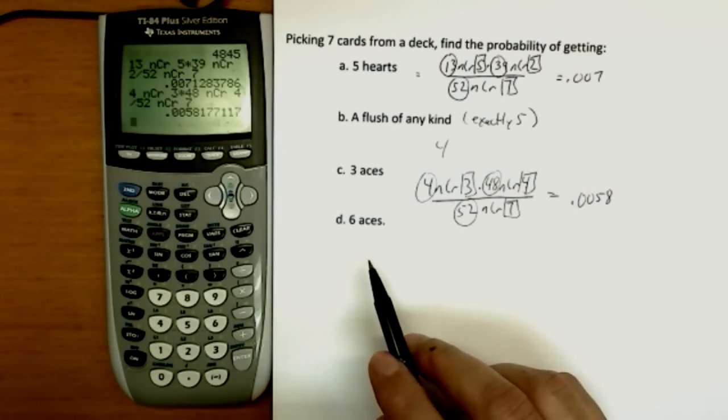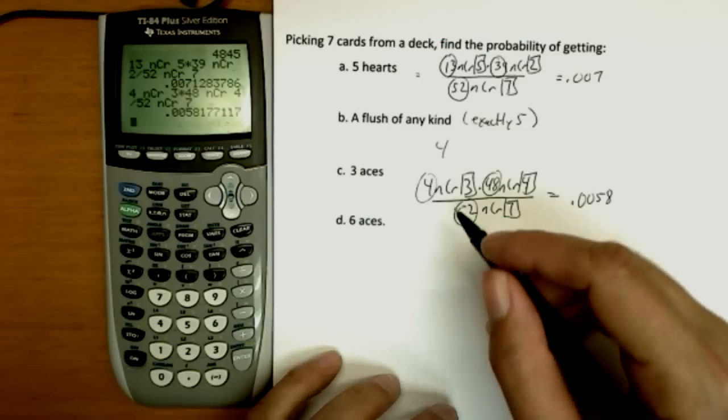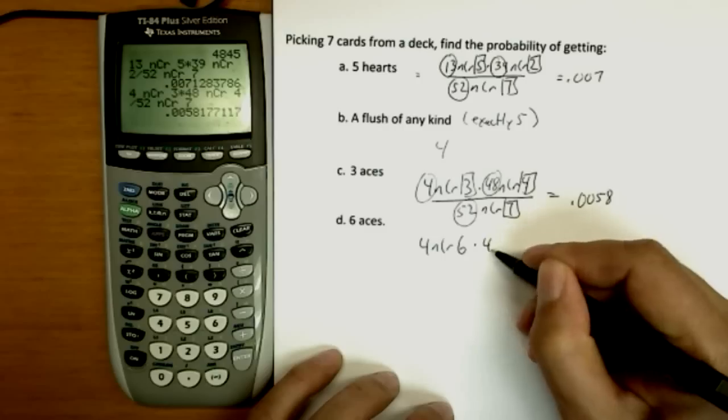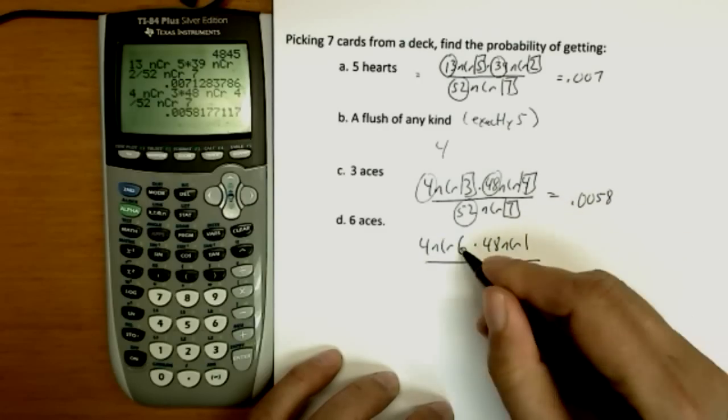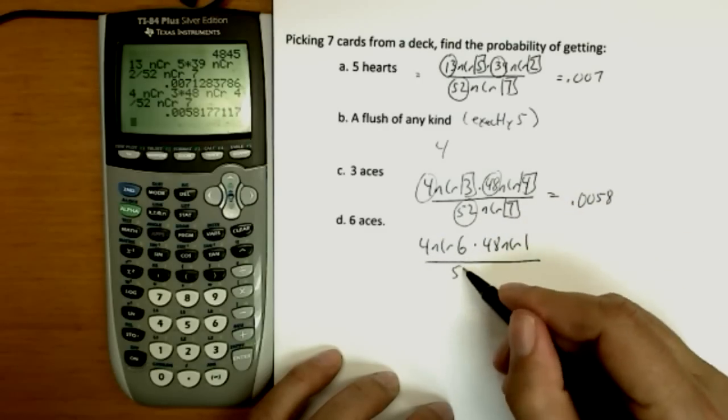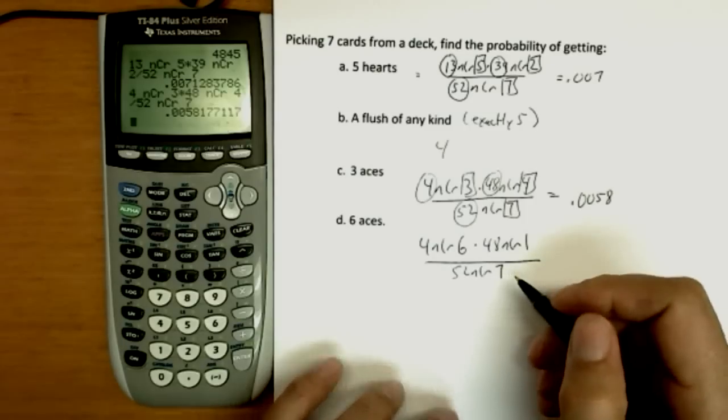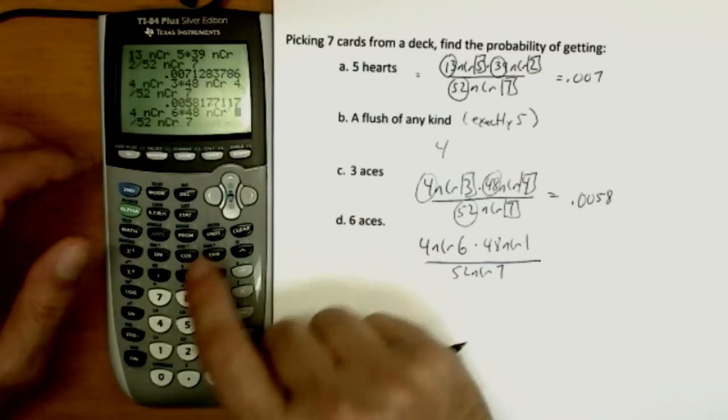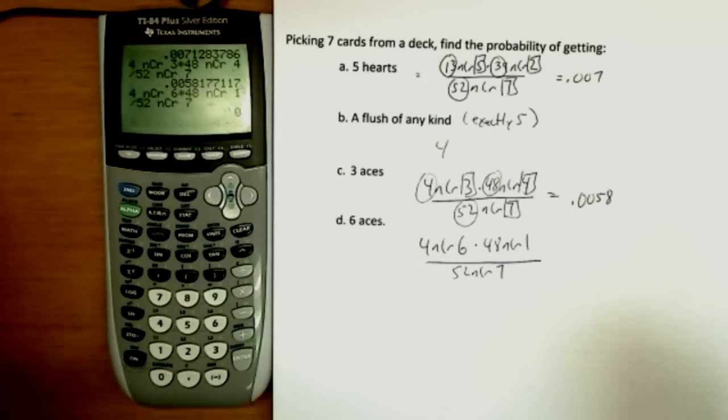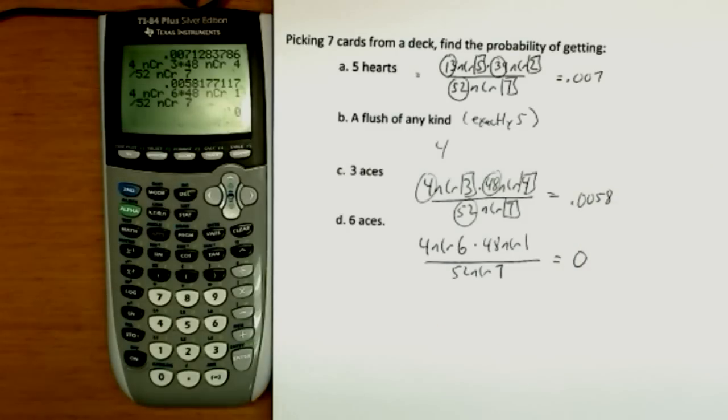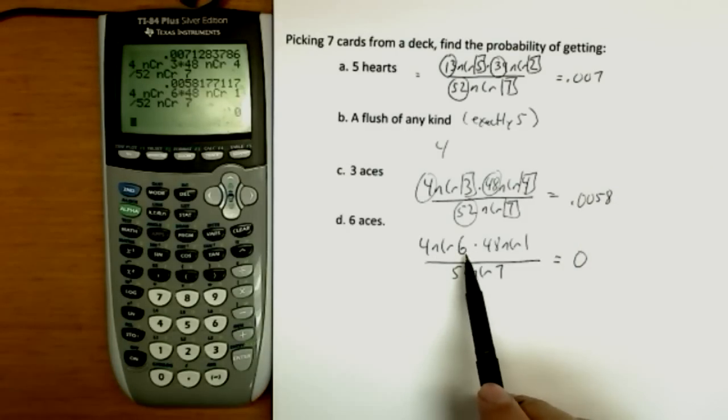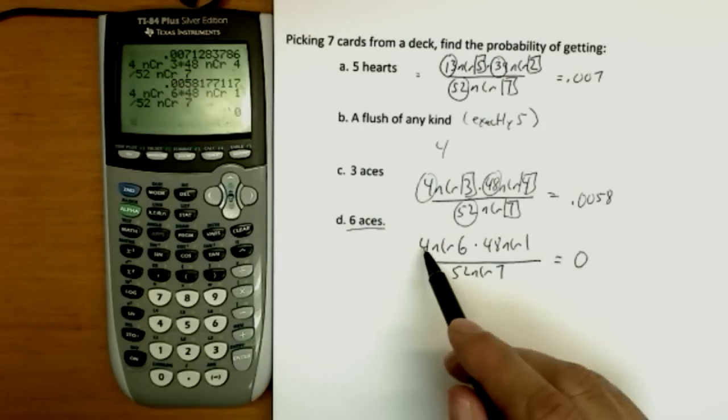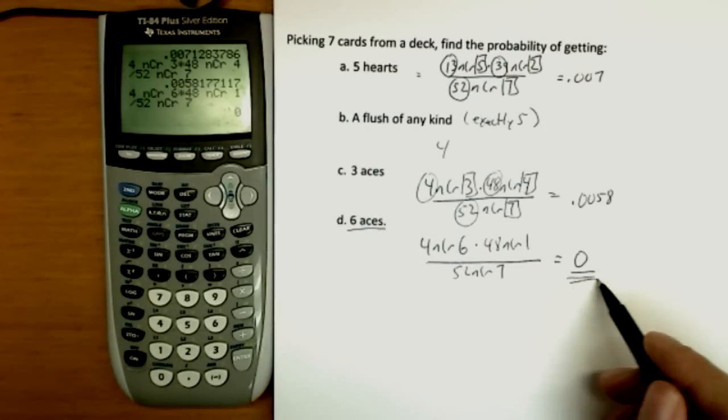6 aces. This would be choosing out of my 4 aces, I'm going to choose 6. And then out of the 48 non-aces, I would choose 1. So there's my 7 cards. 52 NCR7 on the bottom. Let's use the second calculation again. 4 choose 6, 48 choose 1. And hit enter. And it says 0. Is that a surprising result? Well, not really. Is it really possible to get 6 aces? If you get 6 aces, you might get your arms broken in Vegas. Obviously, there's only 4 aces in the deck. How are you going to pick 6? And we know a probability 0 means impossible.